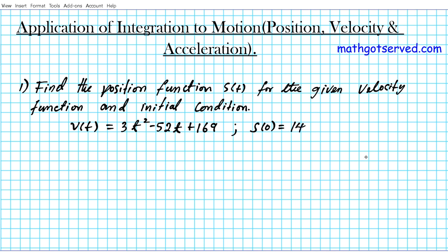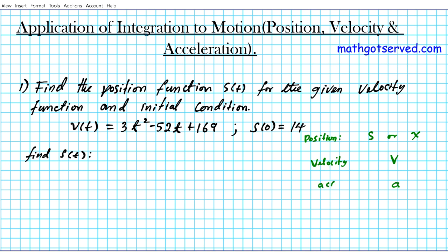We need to find s of t — that's our task. We're given velocity and want to find the position function. So we're going to call up our SIVA continuum. SIVA stands for S or X for position, then velocity, then acceleration. So we have position, velocity, and acceleration — that's SIVA.